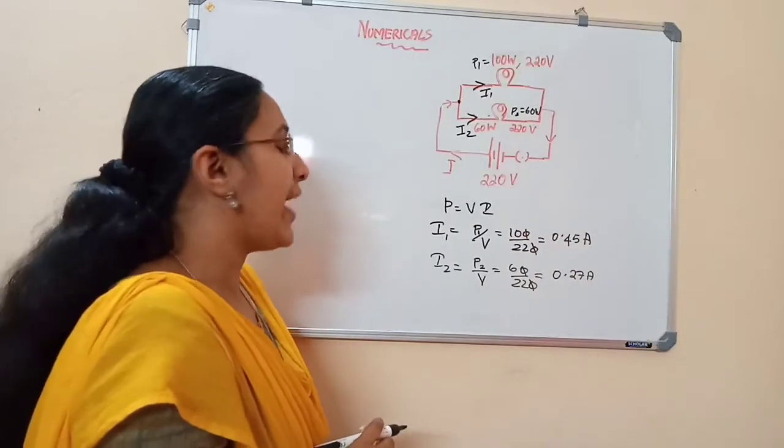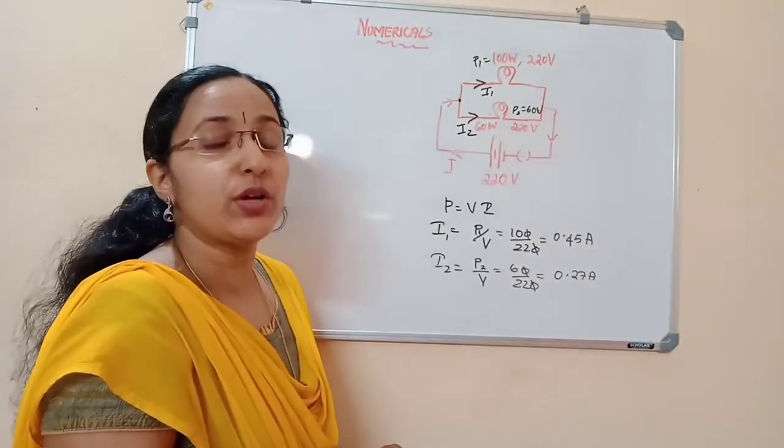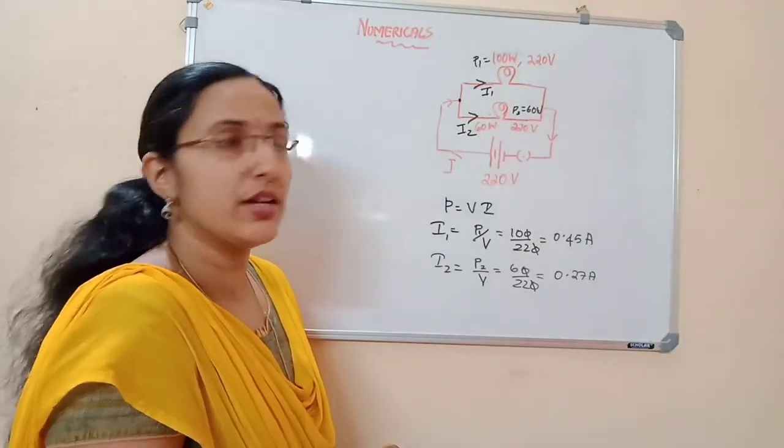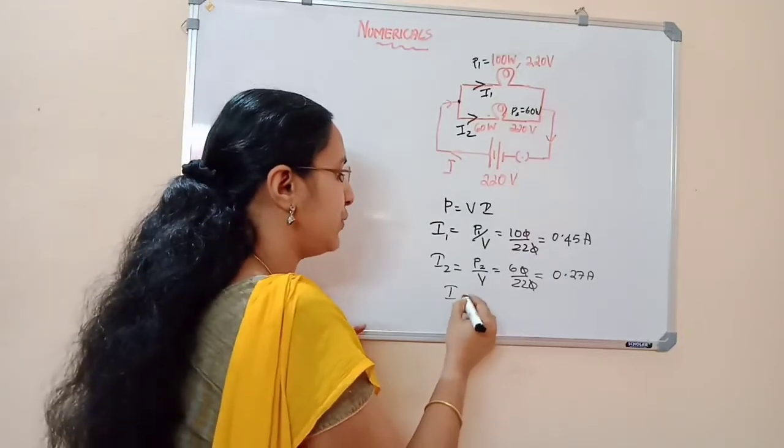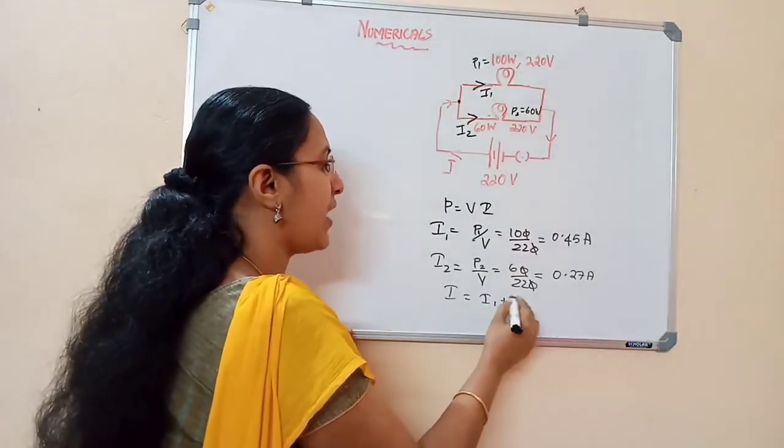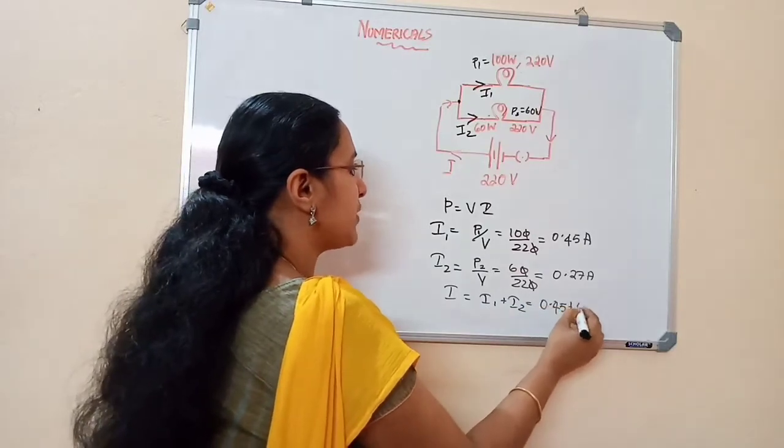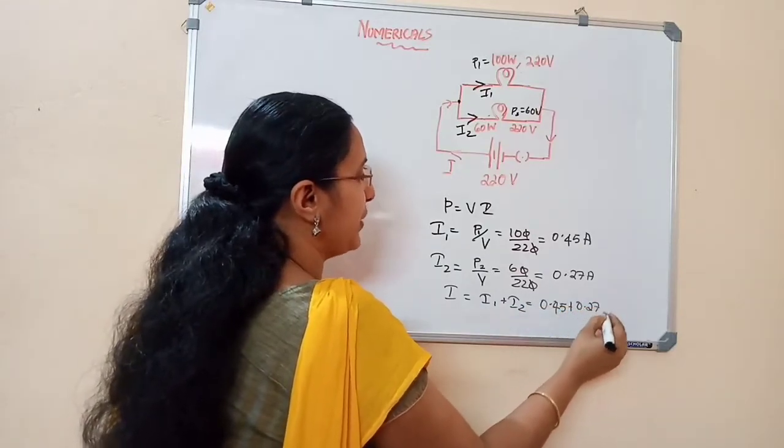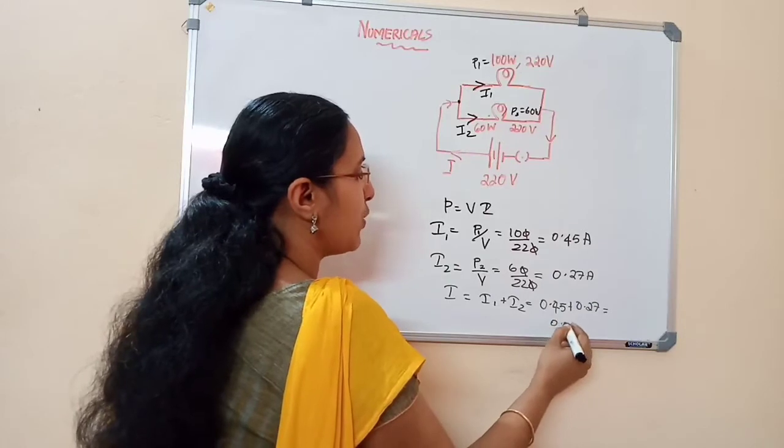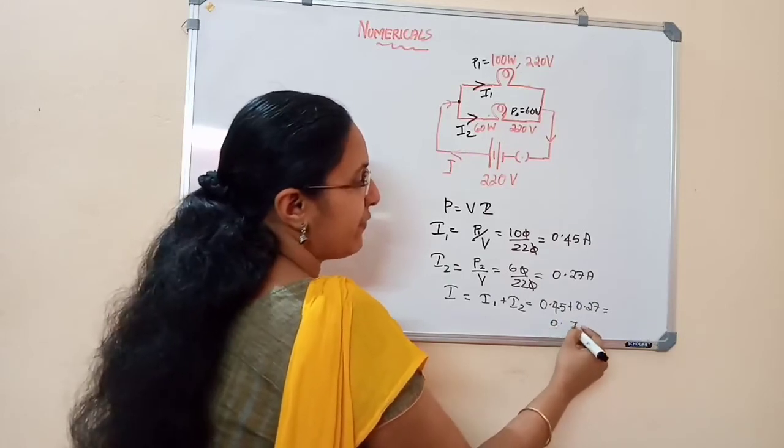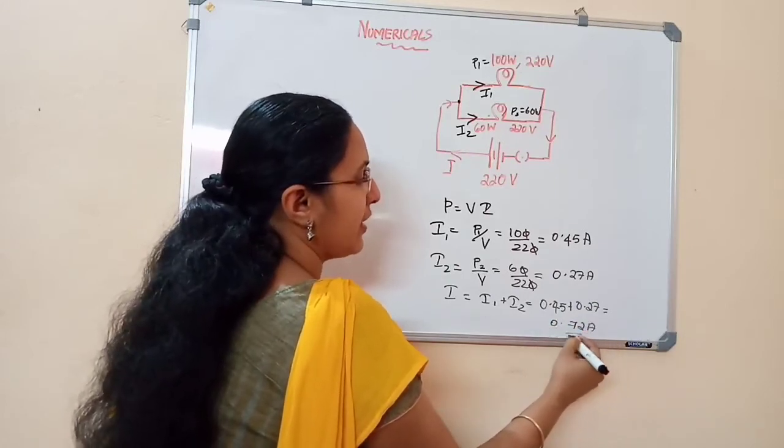So therefore, once we get i1 and i2, what will be the total current in the circuit? Definitely, i is equal to i1 plus i2. That is 0.45 plus 0.27 ampere, which equals 0.72 ampere. That is the answer.